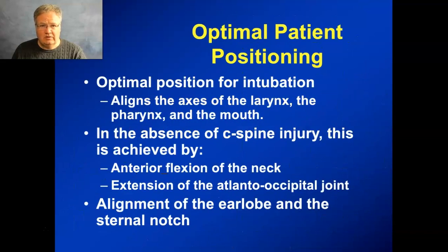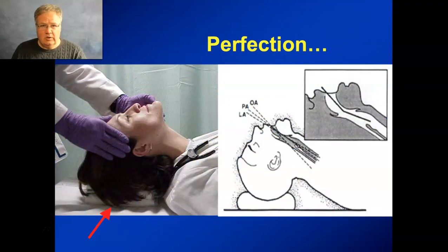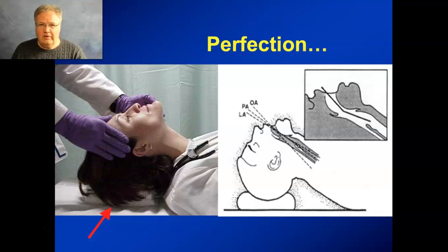The optimal position aligns all the axes — the larynx, the pharynx, and the mouth. Unless a patient has a C-spine injury, we do this by flexing the neck forward and then extending over the atlantooccipital joint at the base of the skull. We're trying to align the edge of the earlobe with the sternal notch. We flex the neck by placing a folded towel beneath the head and extend the atlantooccipital joint by tilting the head backward or displacing the mandible forward. In this position, if you open the mouth you'll pretty much see the vocal cords — it's a straight shot.